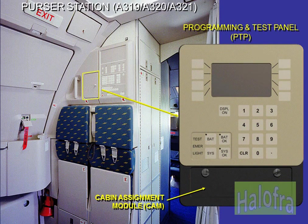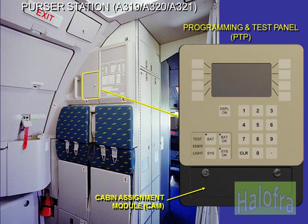The programming and test panel, PTP, is located next to the forward attendant panel, behind a hinged access door. It is equipped with a cabin assignment module, CAM, which contains all the software for specific customer layouts and defined parameters. The PTP informs the crew about the status of the cabin systems.